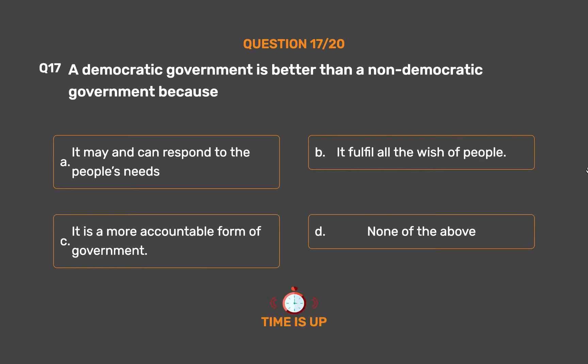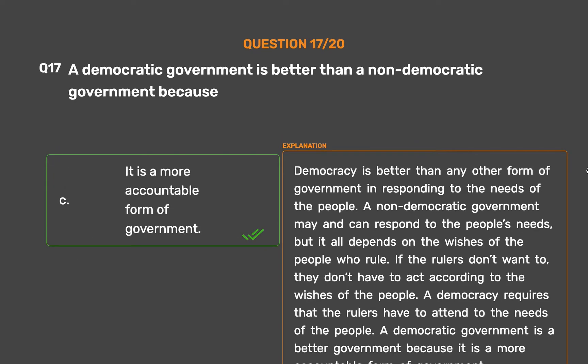The correct answer is Option C: It is a more accountable form of government. Democracy is better than any other form of government in responding to the needs of the people. A non-democratic government may respond to the people's needs, but it depends on the wishes of the rulers. A democracy requires that rulers attend to the needs of the people — it is a more accountable form of government.